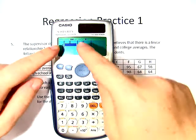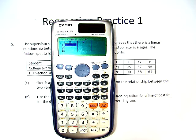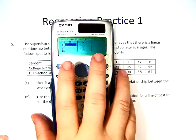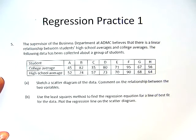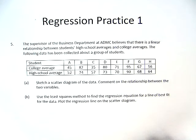Now you see a chart that has X and Y listed. Put your calculator off to the side as we read the first problem. The supervisor of the business department at ADMC believes that there is a linear relationship between students' high school averages and college averages.